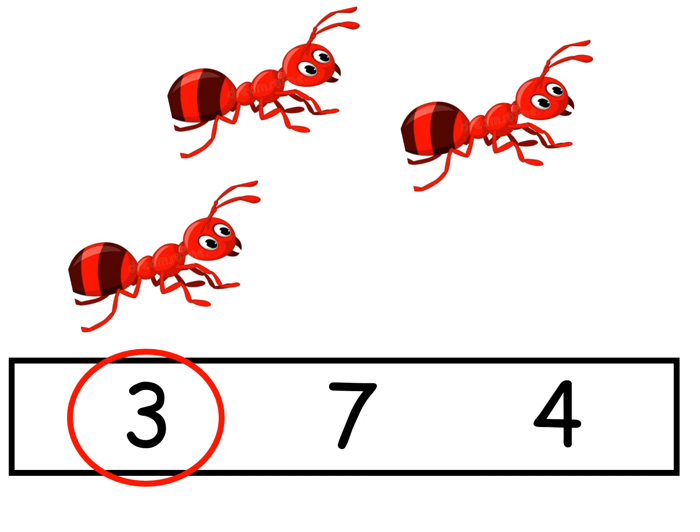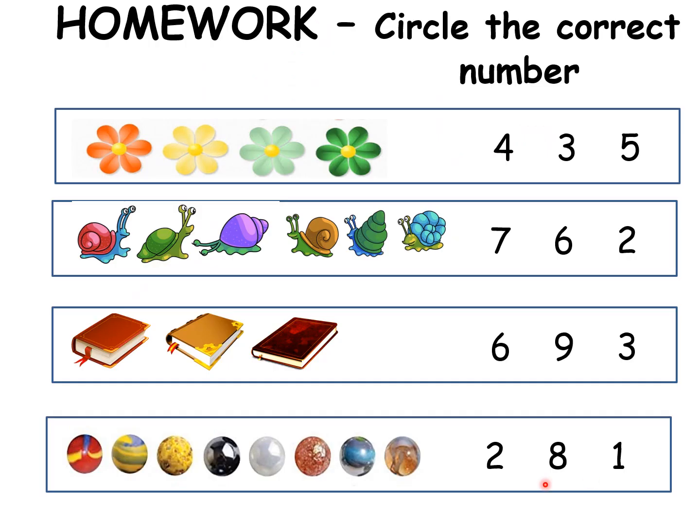That's it. Wasn't it fun? I told you we are going to have fun today. Now, this is something what you are going to do by yourselves. You don't need mummy and daddy to sit with you. It's very simple. We just did it. Count the flowers. Circle the number which belongs to this flower. Count the number of flowers. Circle the number. Count the number of snails. Circle that number. You will do the same with the books and with the marbles. It's going to be fun.